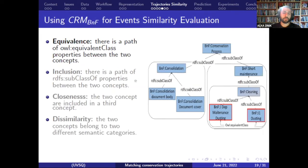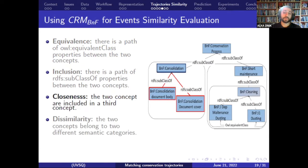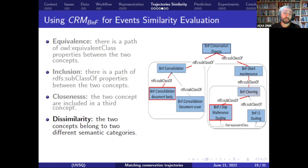For evaluating similarity between events in the ontology, we define four relationships: equivalence, when there is a path of equivalent class between two concepts; inclusion, when there is a path of subclass-of between two concepts; closeness, when two concepts are included in a third concept and are in the same semantic category; and dissimilarity, when two concepts belong to two different semantic categories. The similarity score for inclusion should be higher than for closeness, as it expresses a stronger relationship, while dissimilarity will have the lowest similarity score.